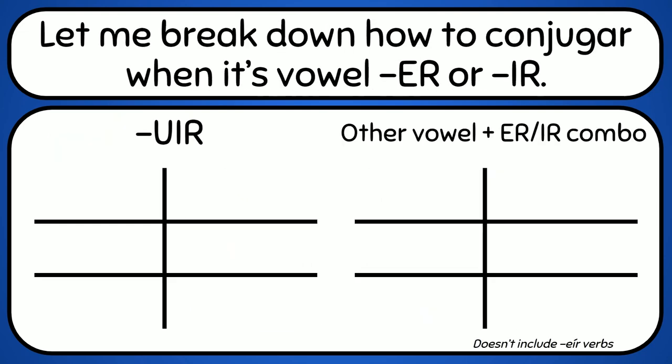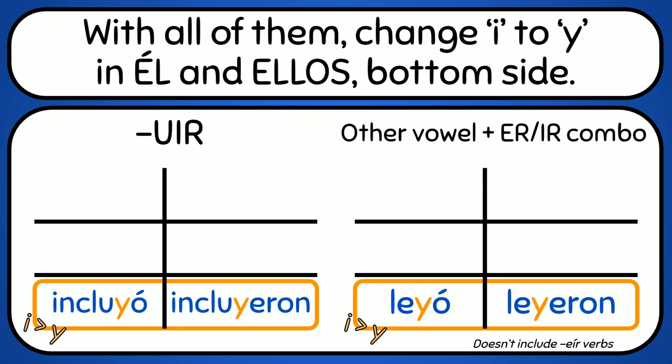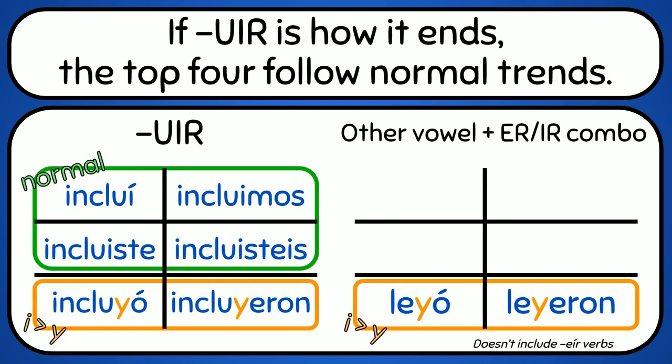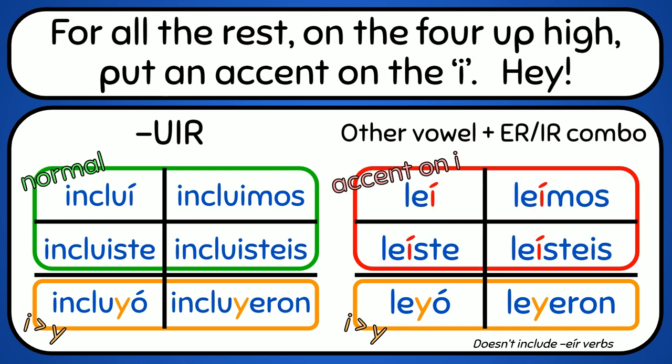Let me break down how to conjugar caer, leer, oír. With all of them, J-K-A-Y and L-N-E-Y's bottom side if you -ir is how it ends. The top four follow normal tracks. For all the rest, on the floor of I, put an accent on the I.